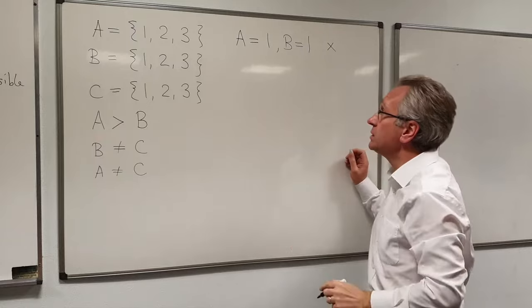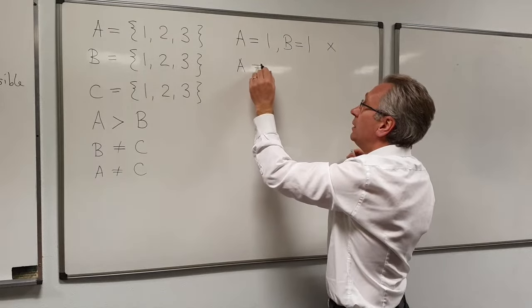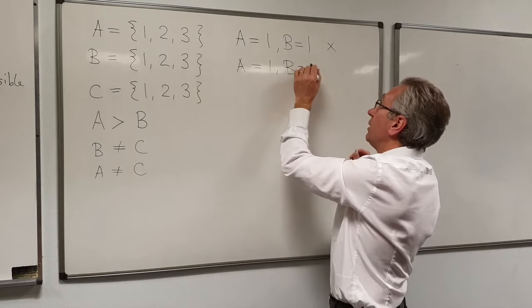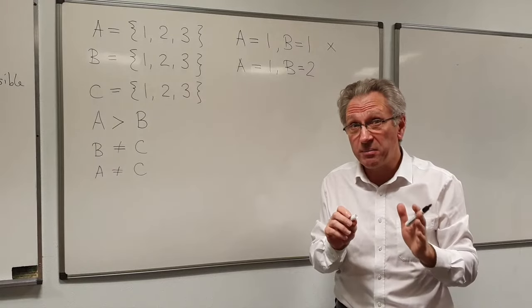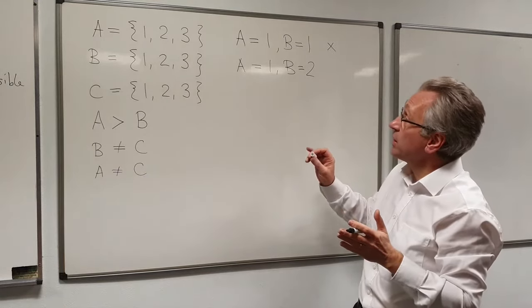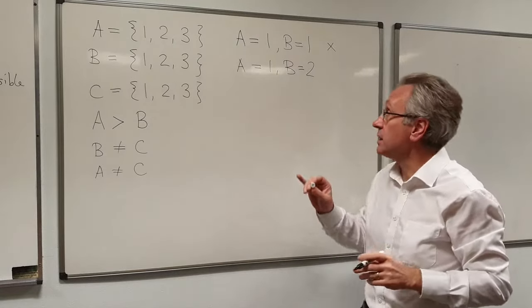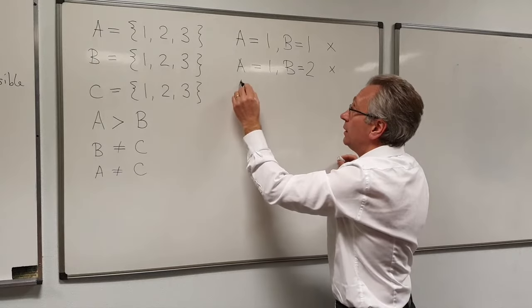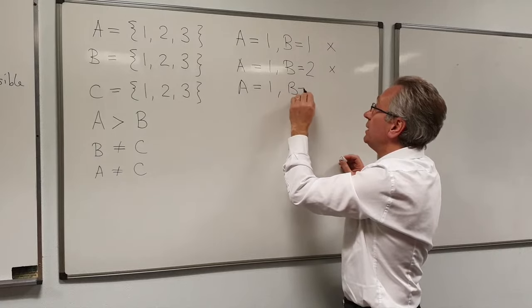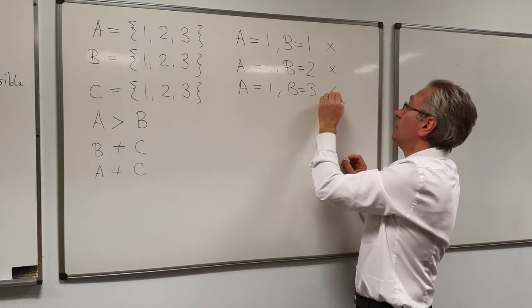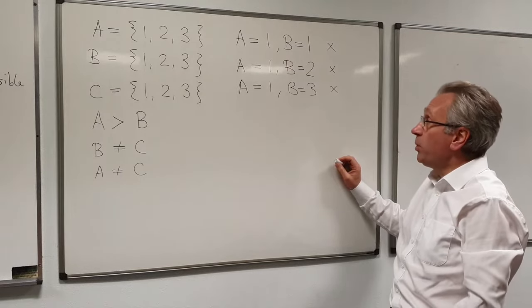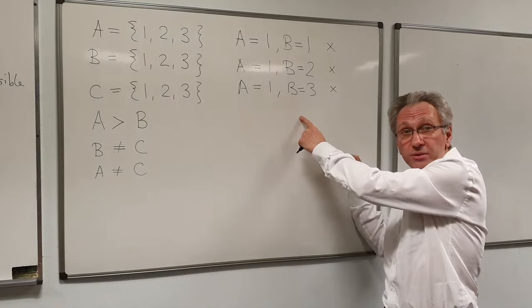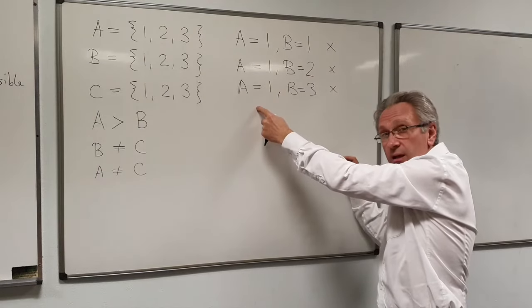So I backtrack on the last decision that I made and I try another value for B. And I just take them systematically left to right. Now you notice that the algorithm isn't being particularly intelligent at this point because it's trying greater values. It's systematic, as I said. So A equals 1, B equals 2, well that breaks that constraint as well. A equals 1, B equals 3 is the next one after the backtrack. That's no good as well.